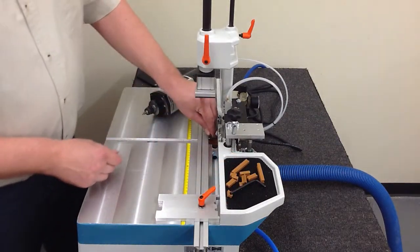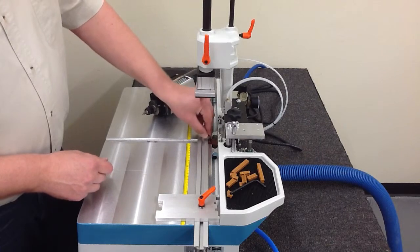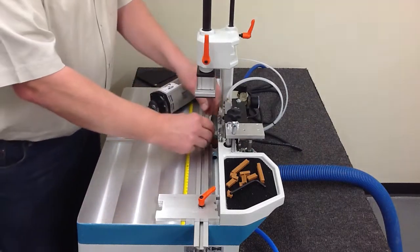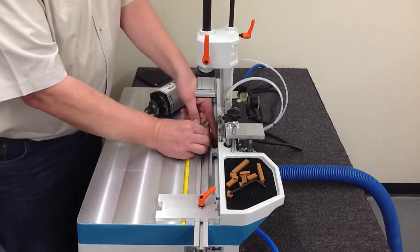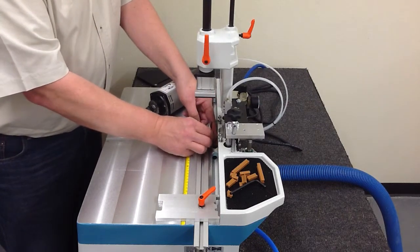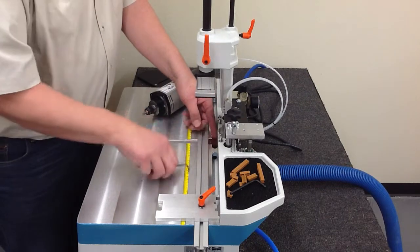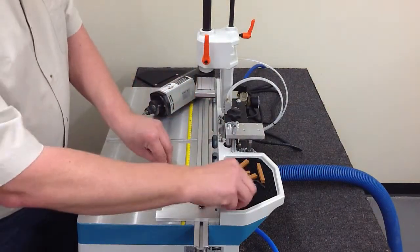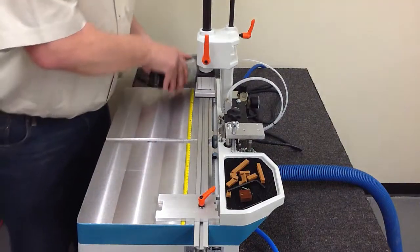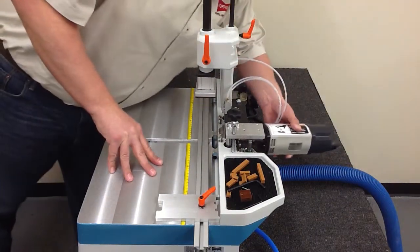Before I install the motor back in the machine, I'm going to take the chip breaker out of the table. It's easier done now while the motor is still out. Set this aside. And we'll put the motor back in.